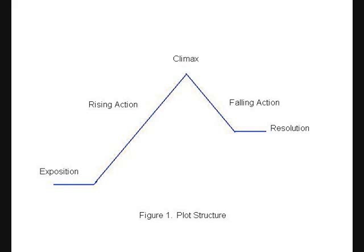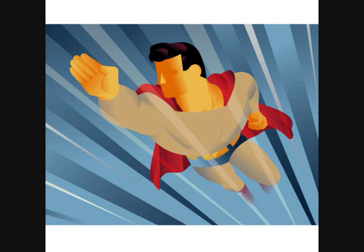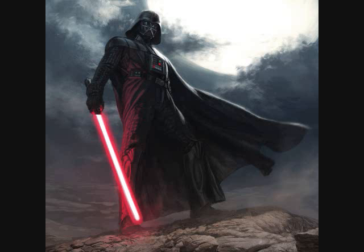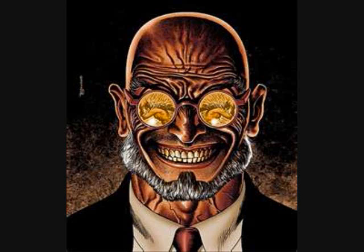Those are the five basic parts of a story, and very essential if you want to make a good story. You have your protagonist and your antagonist. Your protagonist is the hero of the story, and your antagonist is the villain. For the most part, good always triumphs over evil, and evil always wants to destroy good.